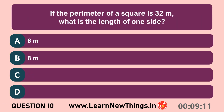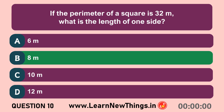If the perimeter of a square is 32 meters, what is the length of one side? 8 m.